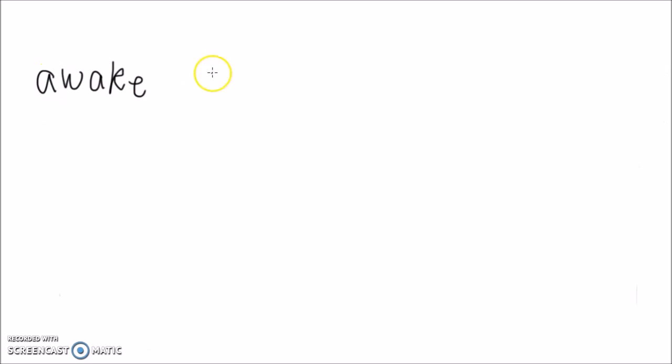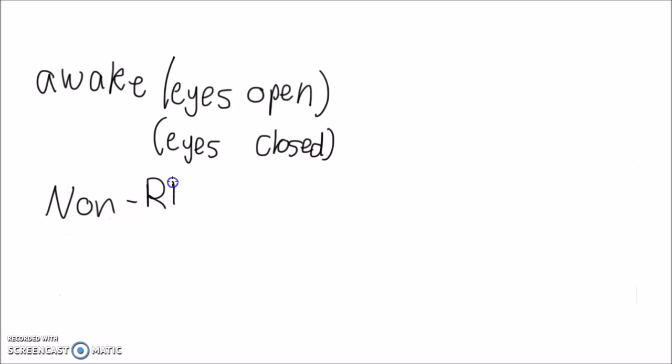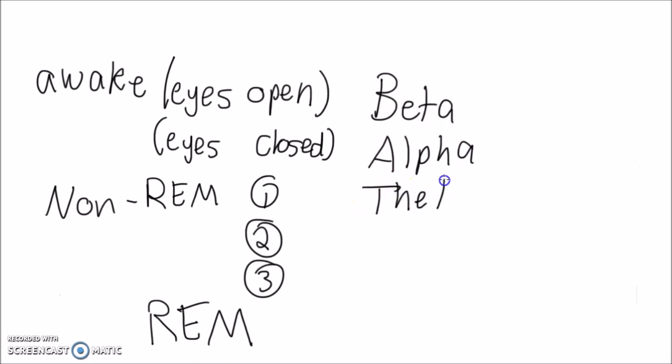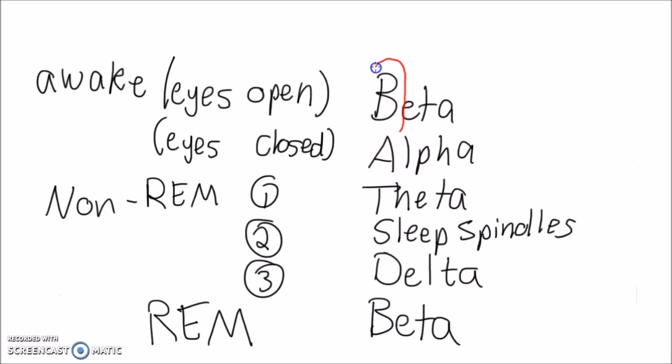Two things to take away from this video. First, notice how the higher frequency waves correspond with more intense brain activity. Second, know how to draw the six EEG waveforms in order by using the mnemonic: At night, bats drink blood.